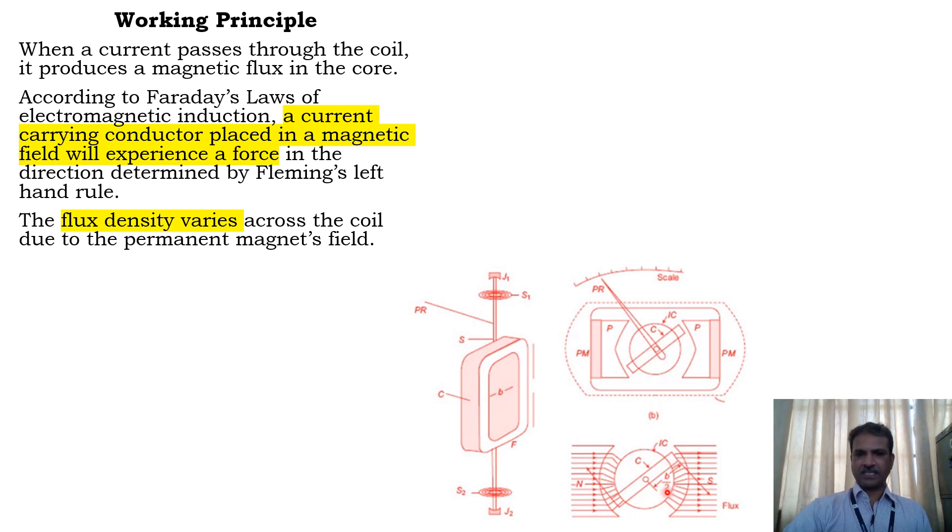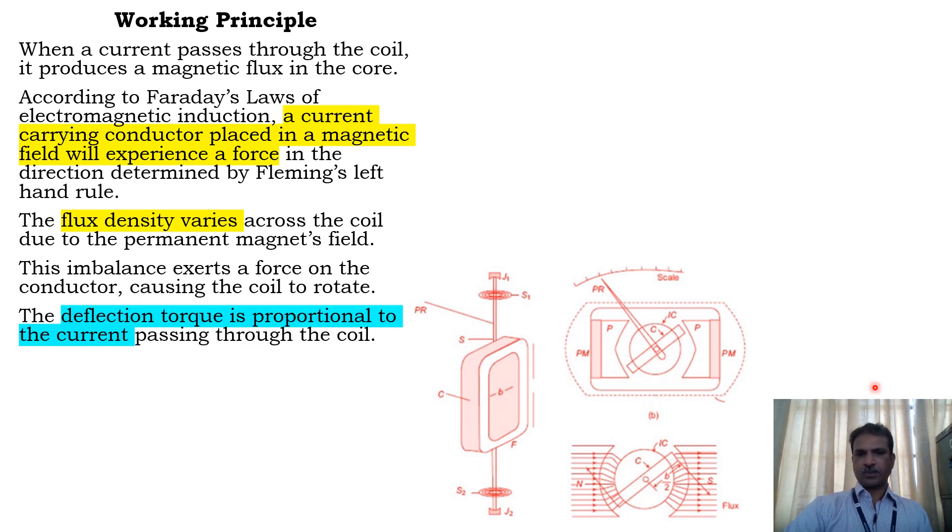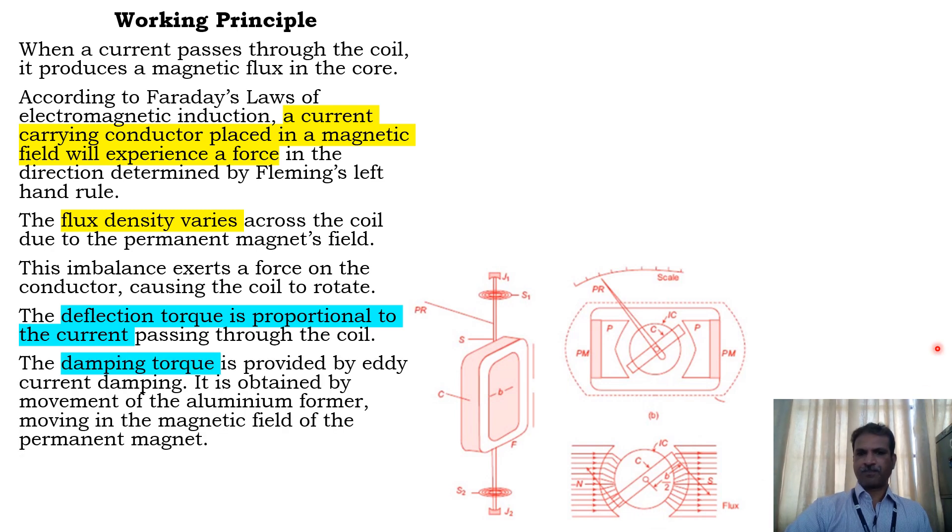The flux density varies across the coil due to the permanent magnet's field, and it is radial in nature. This imbalance exerts a force on the conductor, causing the coil to rotate, which is indirectly connected to the pointer. So the deflecting torque is proportional to the current passing through the coil.